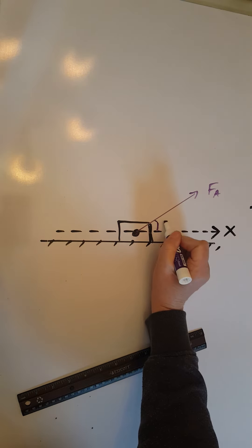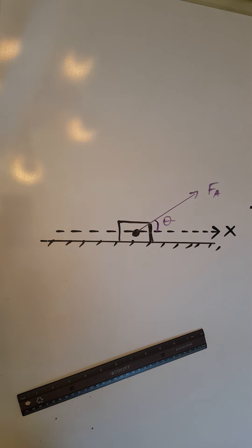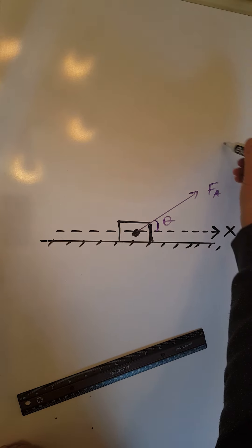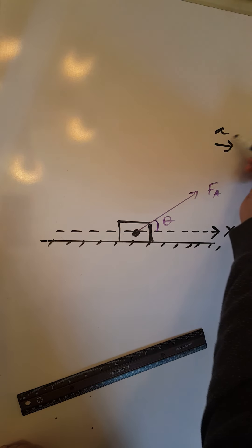And now we have a reference for the angle theta. So there we go, this is my angle theta. This object will accelerate on the table to the right, under the influence of this force. So we have acceleration again to the right.